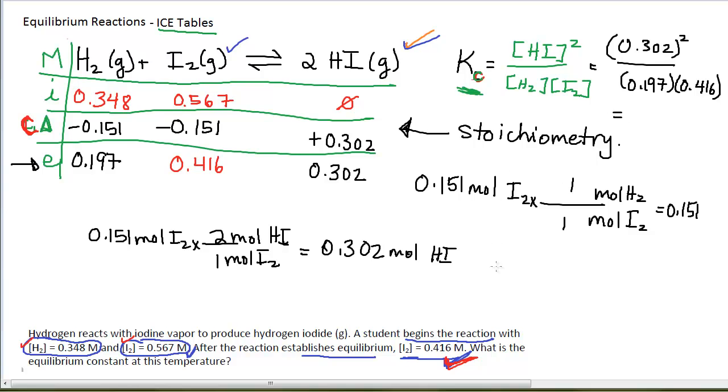Punch these into my calculator and write my answer. Watch your sig figs. Looks like I need 3 sig figs, so my equilibrium constant is 1.11.